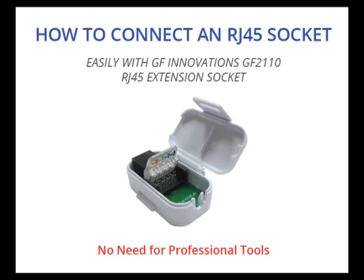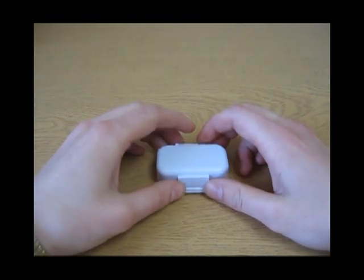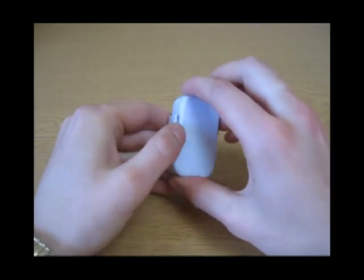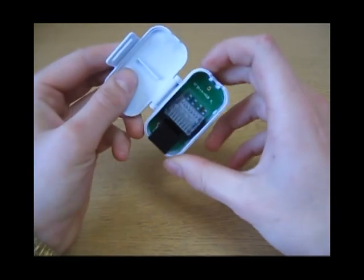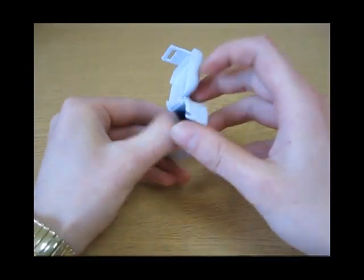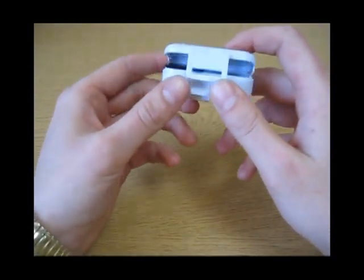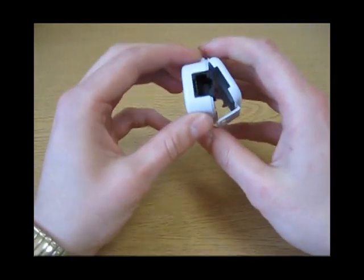In this video today I am going to show you how to create an RJ45 extension socket using GFInnovations GF2110, which is a toolless socket that connects to a bare piece of Cat5e cable. There are no professional tools required like a chrome punch tool which you would probably normally use.